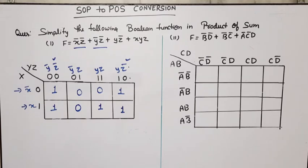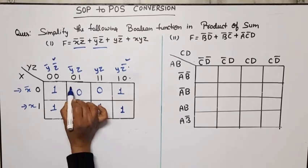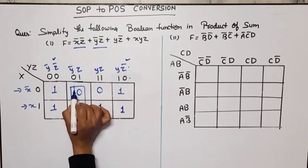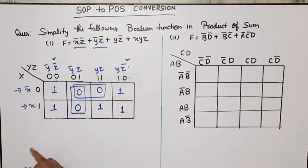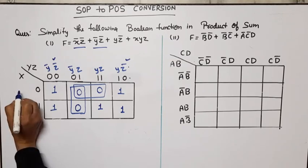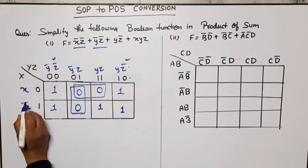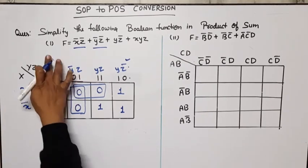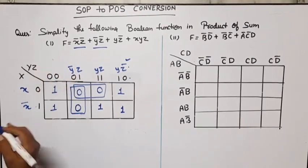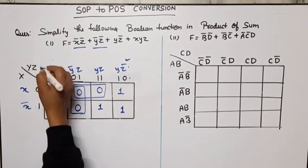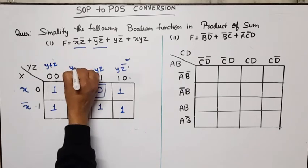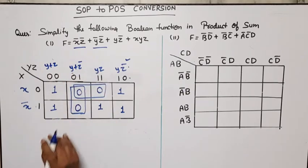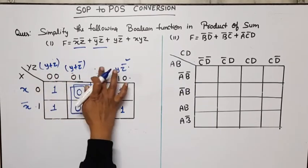Now we have to simplify into product of sums. We have two pairs of zeros. In POS, we write the sum terms from the zeros: a 0-bit means the variable appears without complement and a 1-bit means the variable appears complemented, but connected with a plus sign. So for the first pair, zero means y+z.